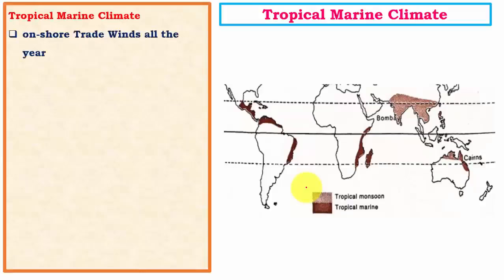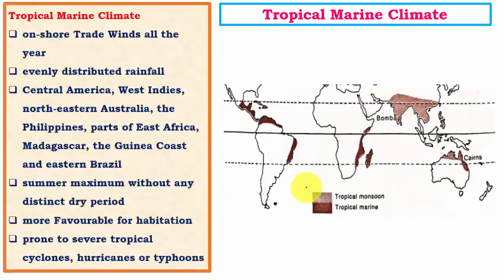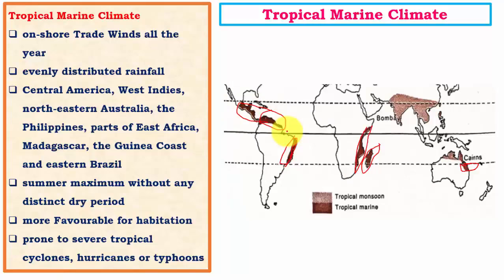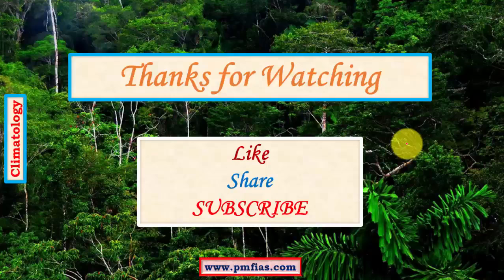The tropical marine climate is a variation of tropical monsoon climate. The major difference is that onshore winds occur throughout the year, unlike tropical monsoon winds which are seasonal. Regions with this climate include the eastern parts of Australia, Madagascar, Mozambique and eastern Africa, eastern Brazil, and parts of Panama. This is not a widely distributed climate — it occurs only in narrow regions along the coast. This concludes the topic of tropical monsoon type of climate, which is very important for both Prelims and Mains.